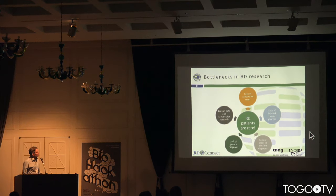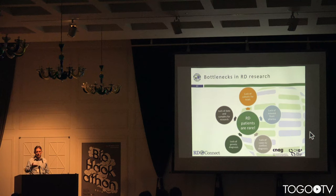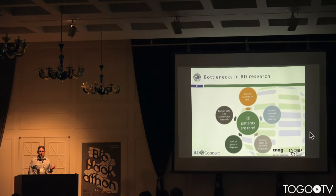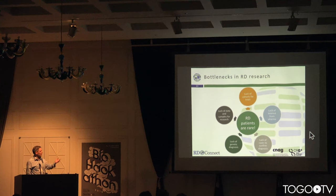There are a variety of bottlenecks, but the main issue is that for each specific rare disease the patients are rare. It's hard for clinicians to get a large sample of patients because they don't come across them very often. This means there's a lack of cohorts for trials, a lack of interest from pharma for developing medicines, a lack of cases to confirm diagnosis, a lack of genetic diagnosis, and a lack of data in general.